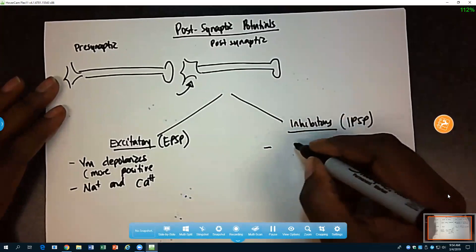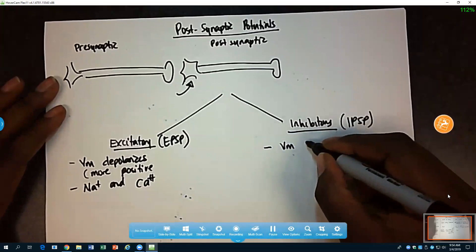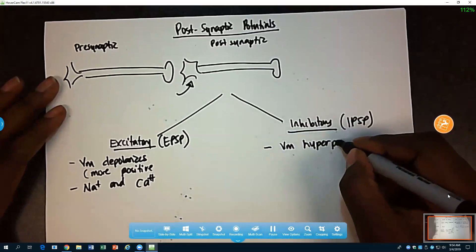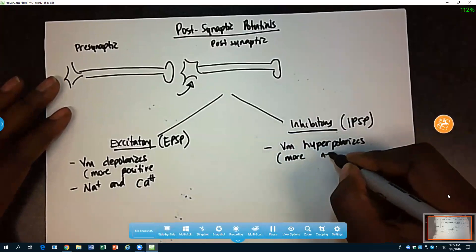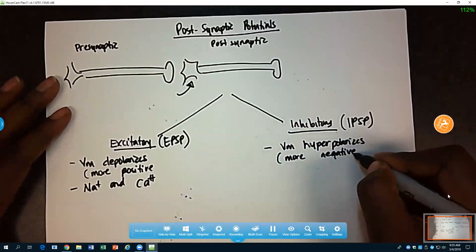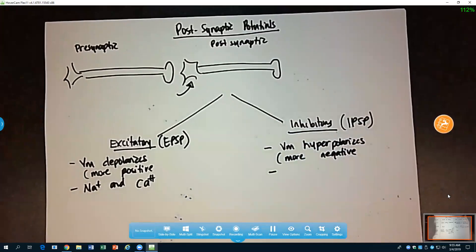Whereas for the EPSPs, the membrane potential change was, so the membrane potential hyperpolarizes, which simply means becomes more negative. And what were the ions involved on this side?